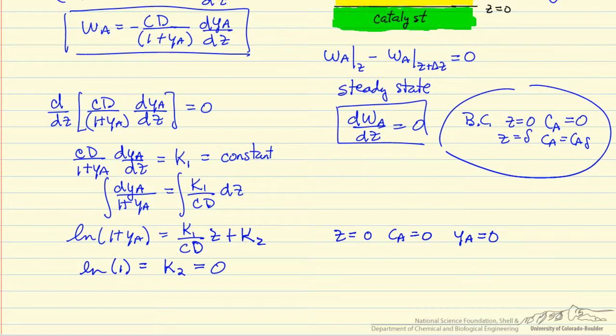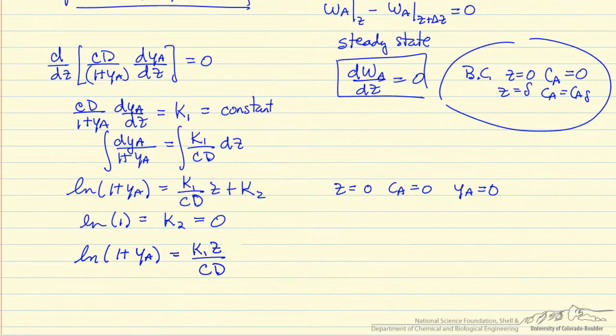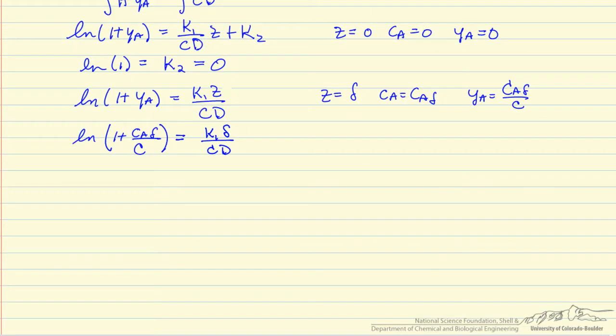So I've written the equation, now with K2 is 0, and now I can use the other boundary condition, namely at Z equals delta, Ca is Ca delta, or Ya is Ca delta over the total concentration. Can I make that substitution into the equation? This means we now have solved for K1.